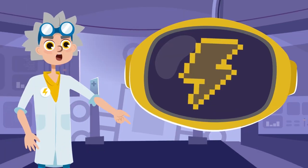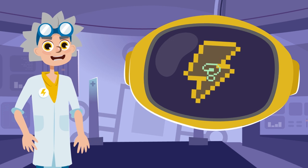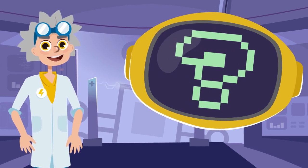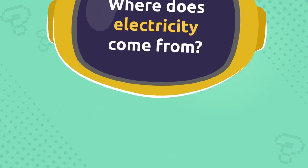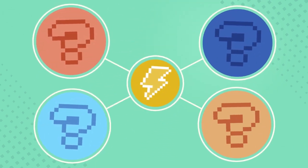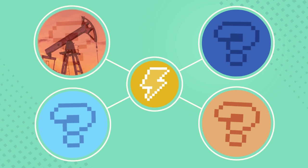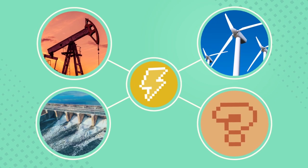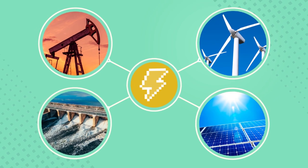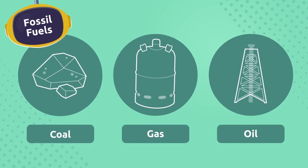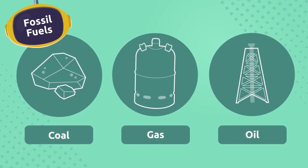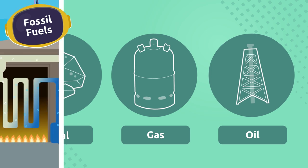As our last friend said, electricity can be produced in many different ways. Let's find out. We can use energy from natural resources like fossil fuels, wind, water, and the sun to create electricity. Let's take a look.